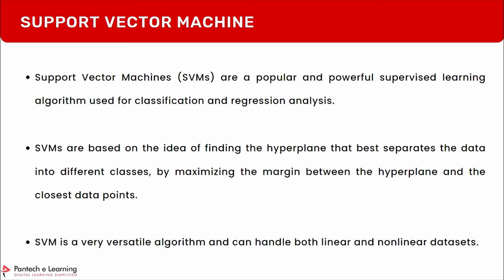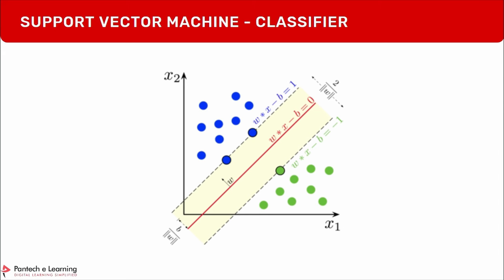Support vector machines are based on finding the hyperplane — a plane or line that best separates the data into different classes by maximizing the margin between the hyperplane and the closest data points. SVM is a very versatile algorithm that can handle both linear and nonlinear datasets. This is how the support vector machine classifies two data points.